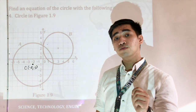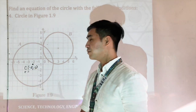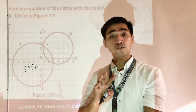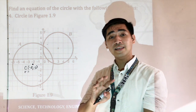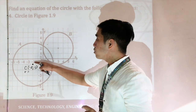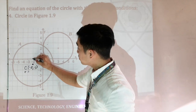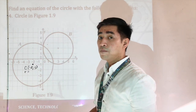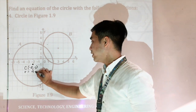Next, we need to get the value of the radius. If we are given this kind of graph, all we have to do is count the number of units from the center going to the circumference of the circle. Counting: 1, 2, 3, 4. Therefore, our radius is equal to 4 units.